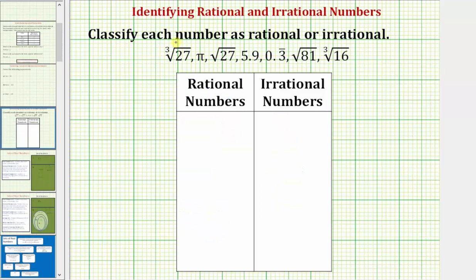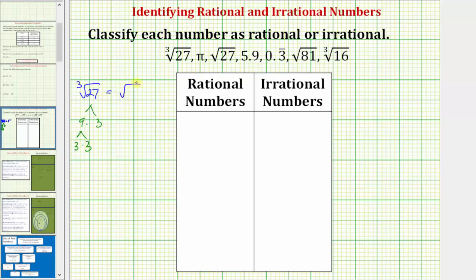Going back to our example, let's first take a look at the cube root of 27. Just because we have a radical here does not mean it's going to be irrational. We want to see if this simplifies. If it simplifies perfectly, then it would be rational. Looking at the prime factorization of 27: 27 is equal to nine times three, and nine is equal to three times three. So this would be the cube root of three cubed. The cube root undoes the cubing, and therefore this simplifies perfectly to three, which is rational. So the cube root of 27 is a rational number.